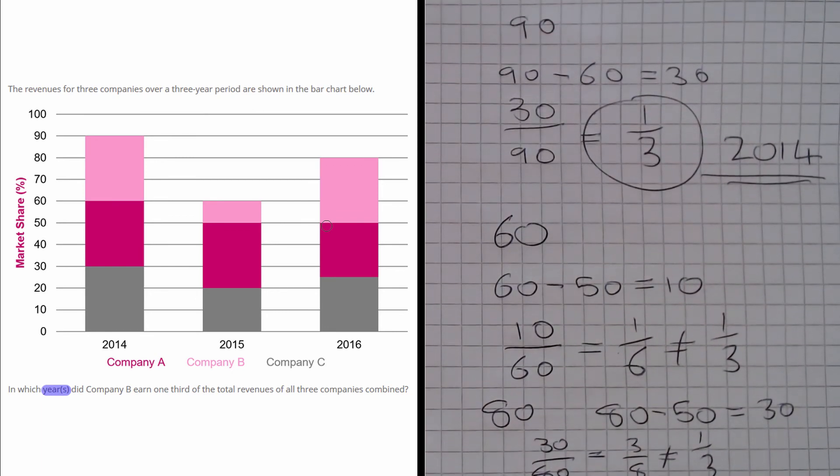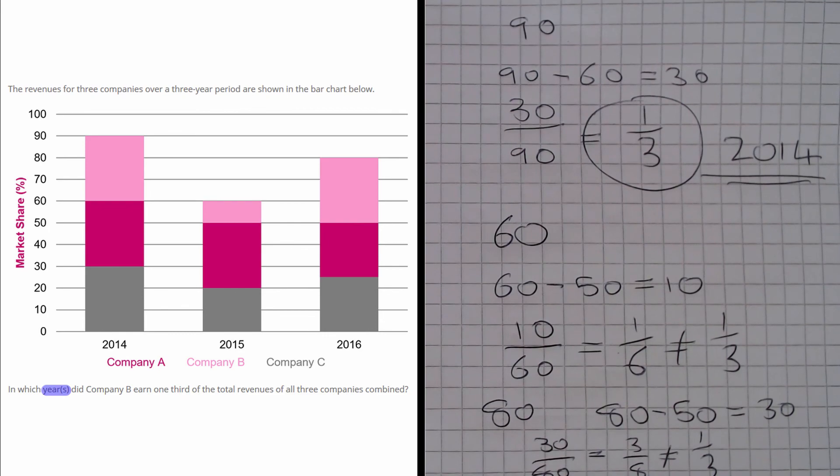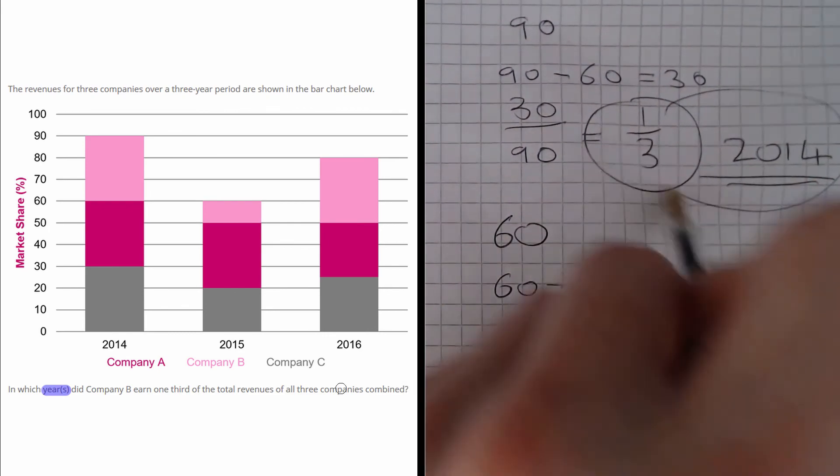So there's only one year in which Company B earns a third of the total revenue, and that was in 2014. So that is our answer.